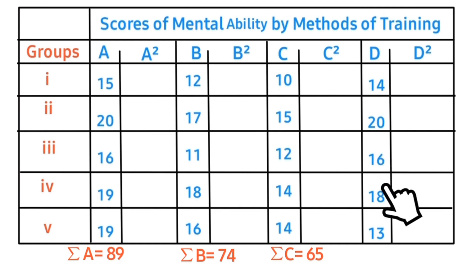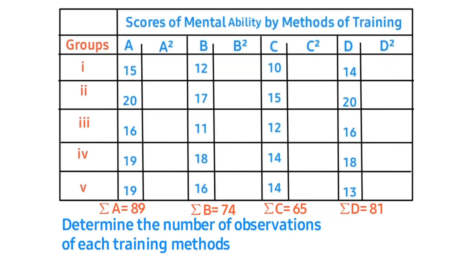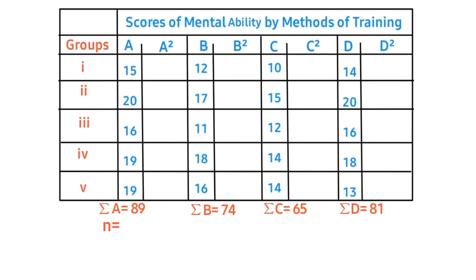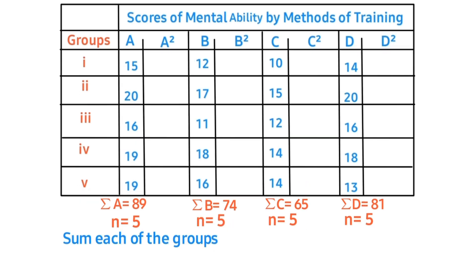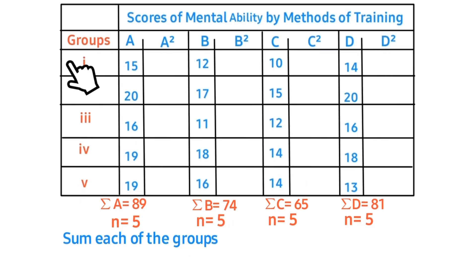Determine the number of observations for each training method, represented by small letter n. Counting: one, two, three, four, five — so each training method has five observations. Next, sum each of the groups. We have five groups: group one, group two, group three, group four, and group five.